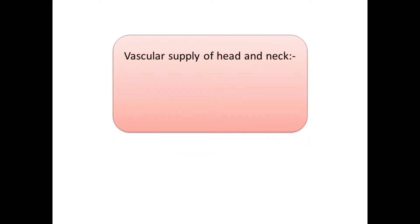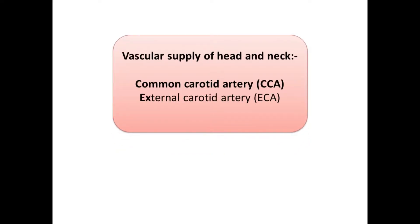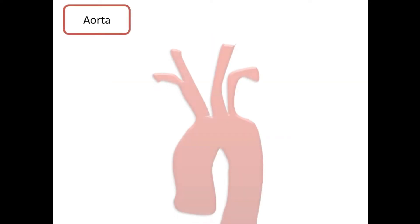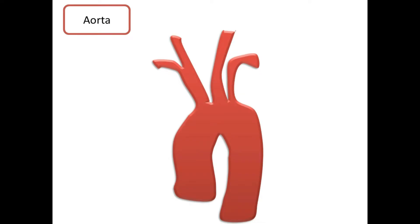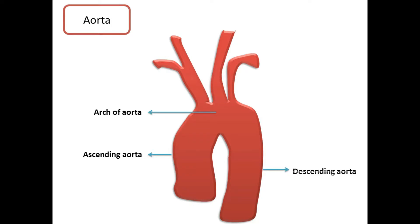Vascular supply of head and neck: the common carotid artery, external carotid artery, and the internal carotid artery. The arteries supplying the head and neck region arise primarily from the aorta, which arises from the left ventricle. The aorta is divided into ascending aorta, arch of aorta, and the descending aorta.